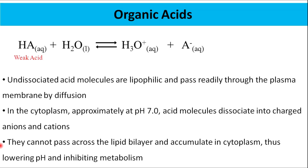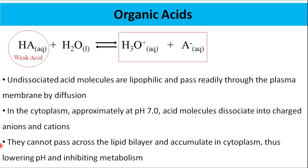We can use acids as preservatives. When a weak acid is dissolved in water, equilibrium is established between undissociated acid molecules and charged anions. The proportion of undissociated acid increases with the decreasing of pH. The currently accepted theory of preservative action suggests inhibition via depression of internal pH. Undissociated acid molecules are lipophilic and pass readily through the plasma membrane by diffusion. In the cytoplasm, approximately at pH 7, acid molecules dissociate into charged anions and cations.